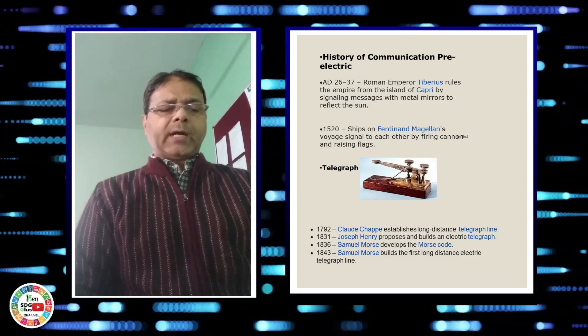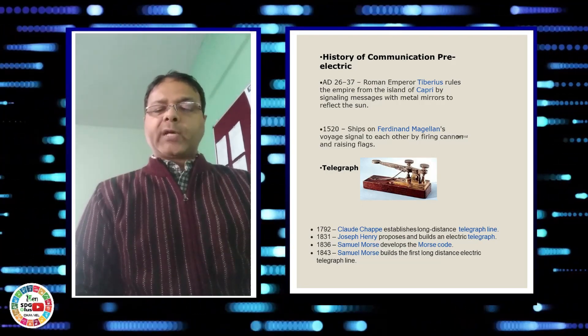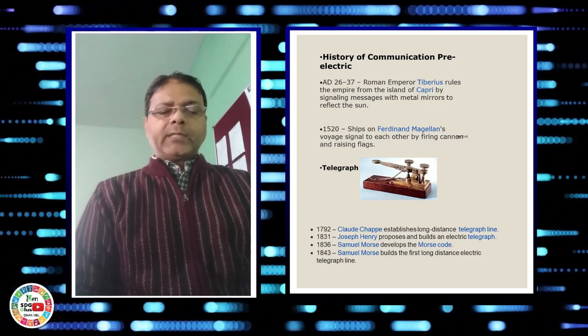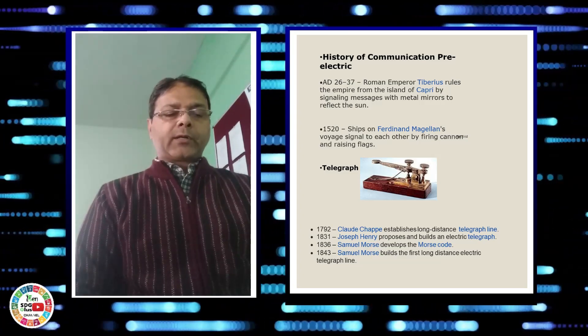For example, if we assign dot dot for English alphabet A, at the receiving end if we receive dot dot it will be reproduced as A. In this way, signals will be coded at transmitting end and decoded at receiving end.